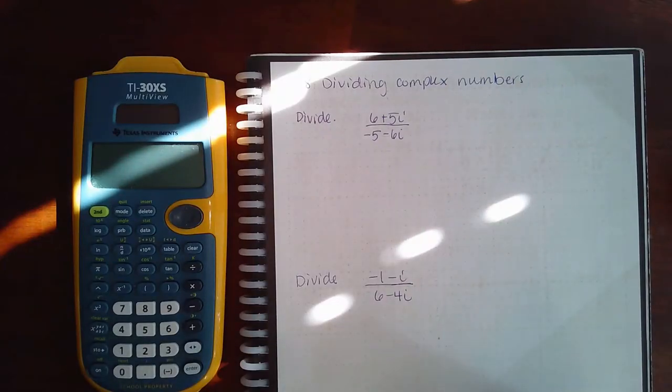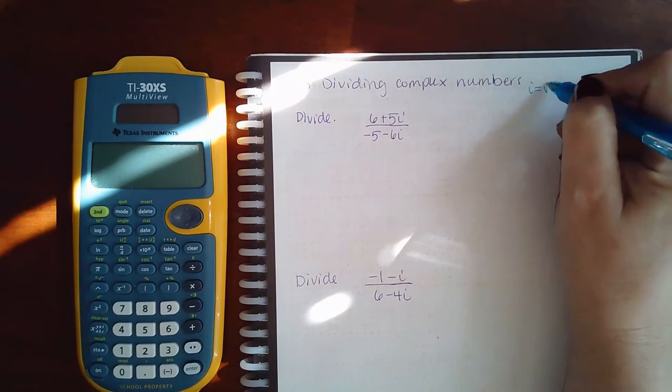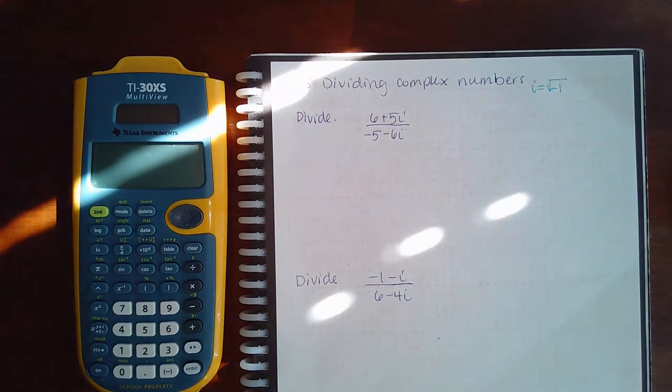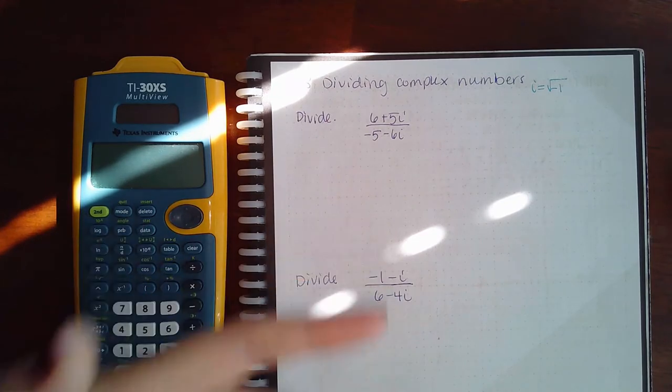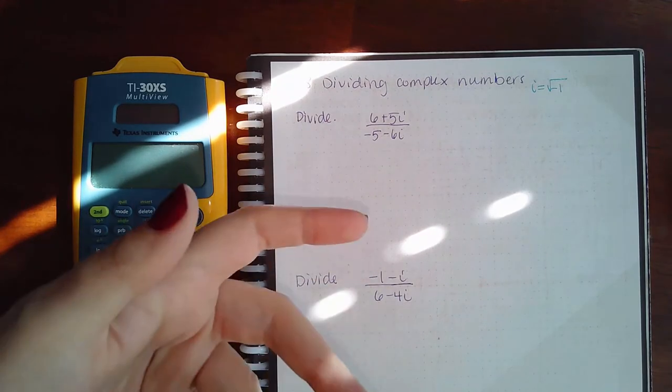Here we have dividing complex numbers. Just like the section where we were talking about rationalizing denominators, we have to remember that i is the square root of negative one. It is a radical, just like a disguised radical. And whenever you have a radical in the denominator, you have to rationalize that denominator. You don't have a choice.